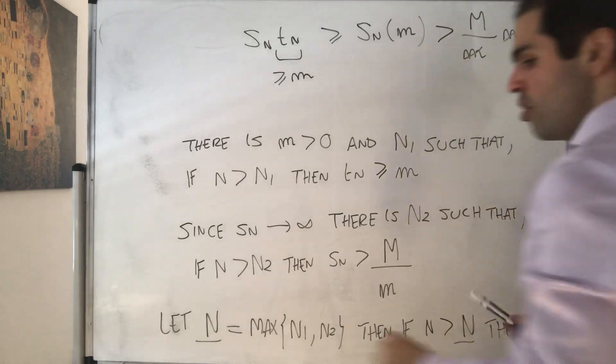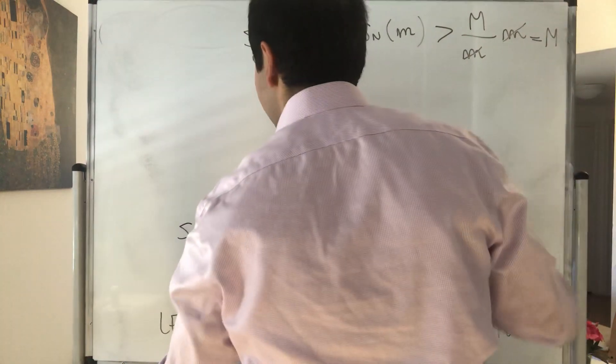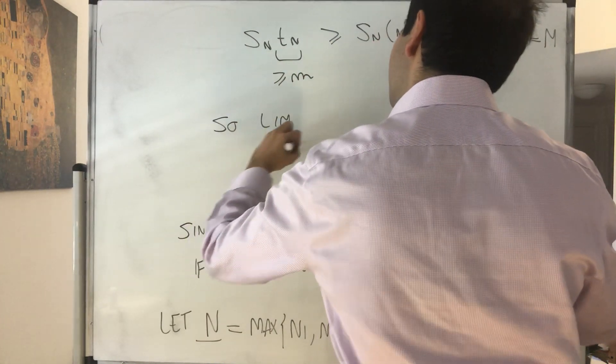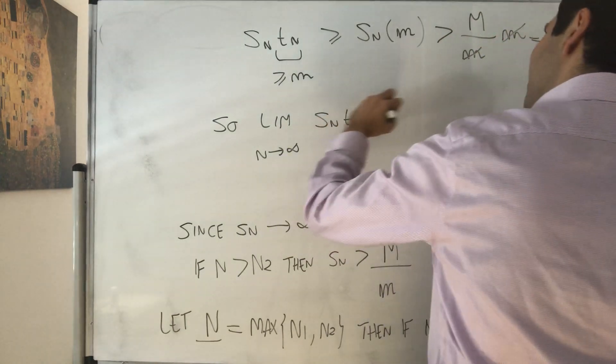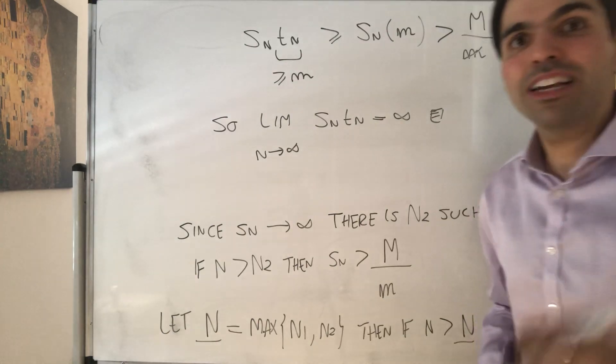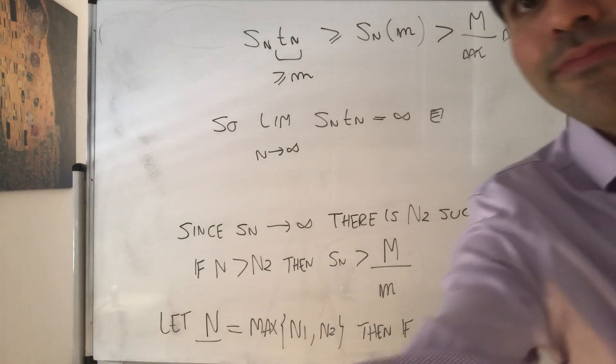And therefore, Sn Tn is arbitrarily large, so in particular, the limit is infinity. So limit n goes to infinity of Sn Tn is infinity, because it eventually becomes arbitrarily large. All right, thank you very much. Thank you.